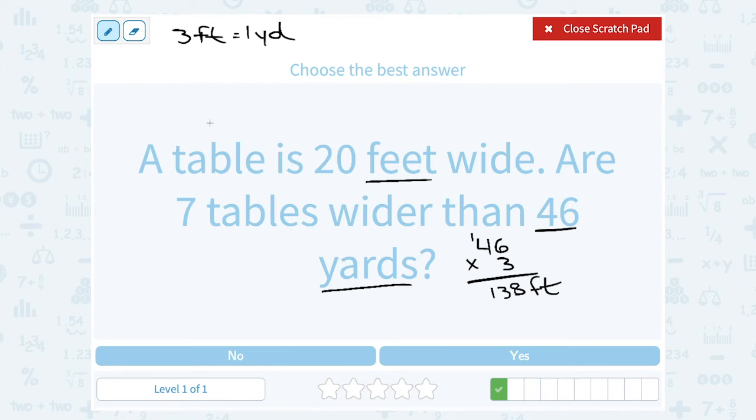Okay well if each table is 20 feet wide and we have 7 of them we would have to multiply the length of our table 20 feet by how many tables we have 7 to figure out our total number of feet.